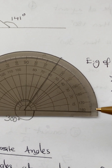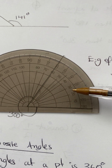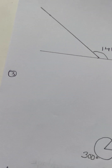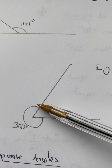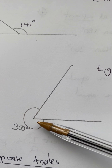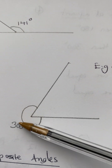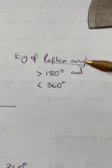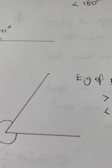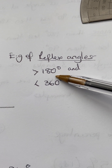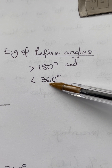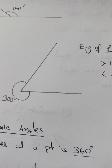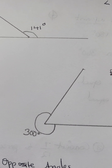To measure a reflex angle, measure the smaller angle with the protractor starting from zero — that gives about 60 degrees. Then since the full angle at the point is 360, do 360 minus 60, which gives 300 degrees. So this reflex angle is 300 degrees — more than 180 but less than 360. That's how you use the protractor to measure reflex angles.